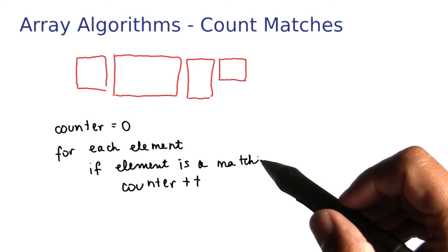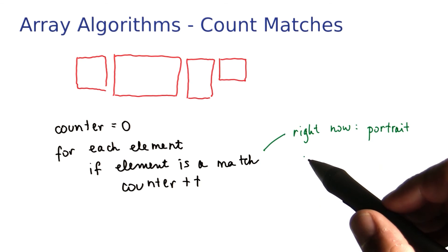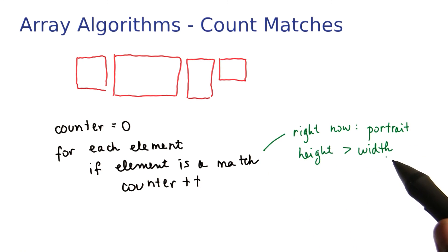If you have an array of pictures, like we have in our example, we happen to want to know the ones that are portrait. Those are the ones for which the height is greater than the width.